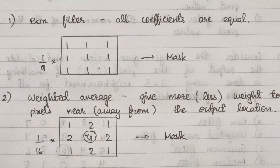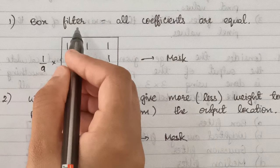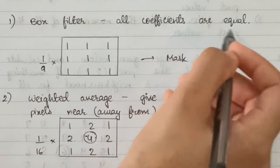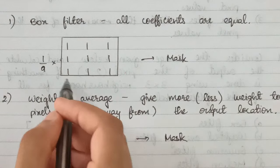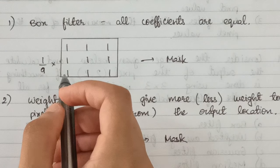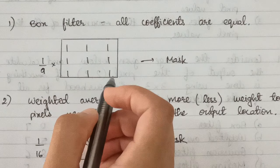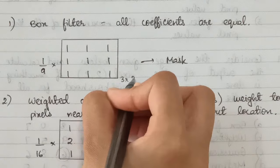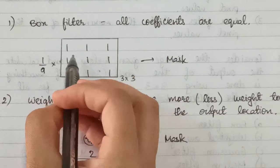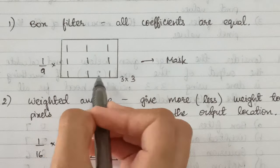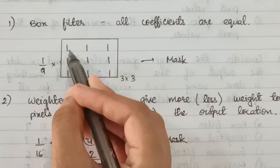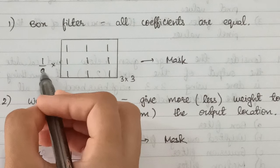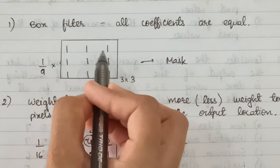In smoothing linear filters, the first type is box filter. Here all the coefficients are equal. This is an example of a 3 by 3 mask for box filter. All pixel values are equal to one, and it is multiplied by 1 by 9 because if you take the sum of each of these values it is equal to 9.